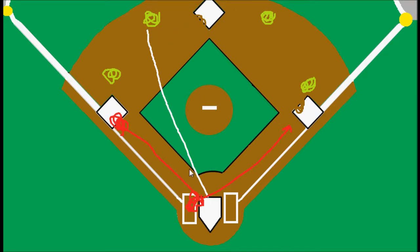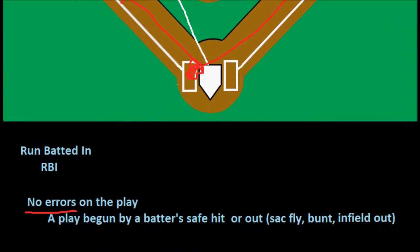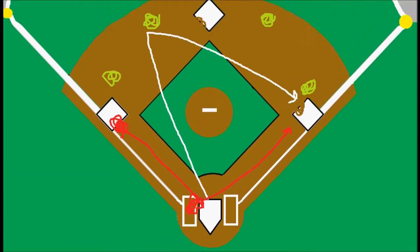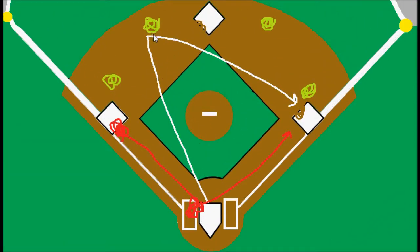The shortstop has the option to throw the ball home and try to get the runner. But let's say he's content to get the out, so he throws it over to first and gets the batter out. That's an ordinary situation — the first method — where there are no errors on the play and it's an infield out where a run scored because the ball was put in play by the batter, so we give the batter credit.